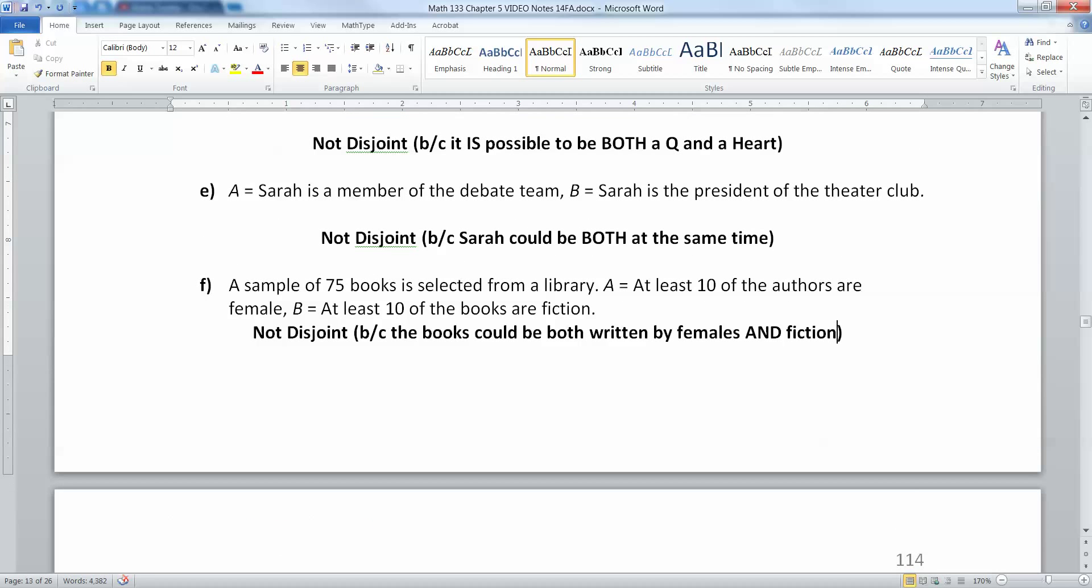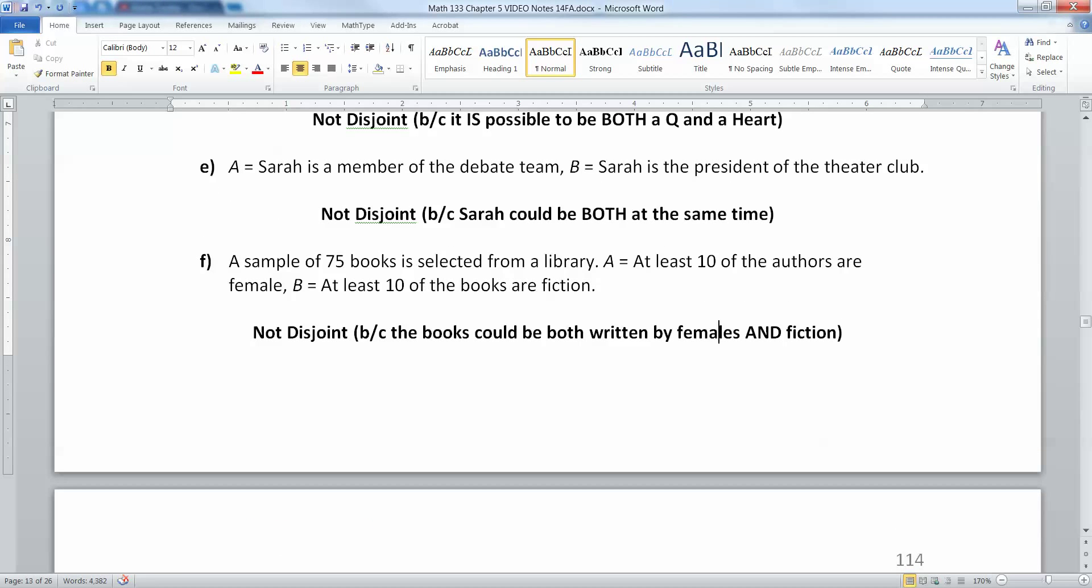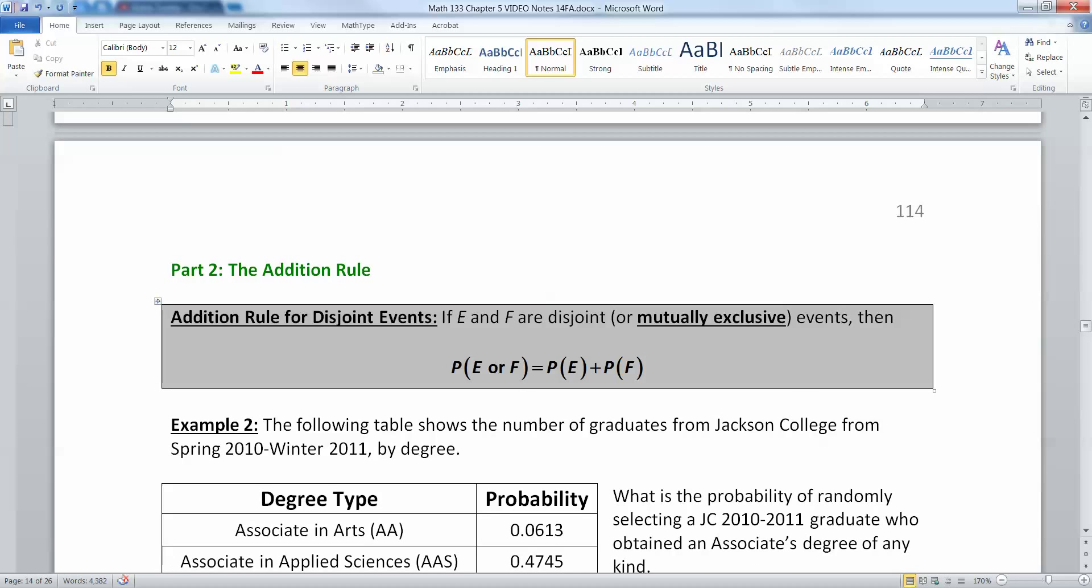Now that we have that definition down, that's going to help us here with the addition rule for disjoint events. If you have two events that are disjoint or mutually exclusive, then the probability of E or F is equal to the probability of E plus the probability of F.